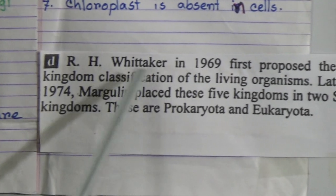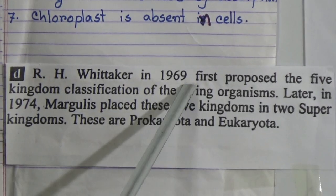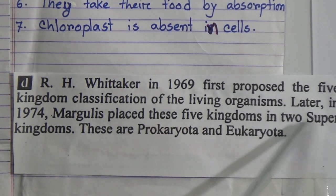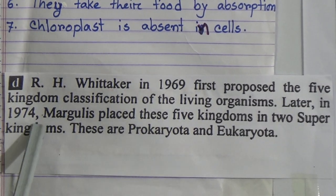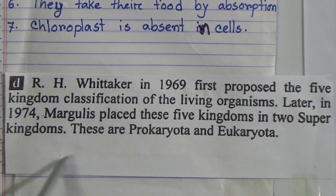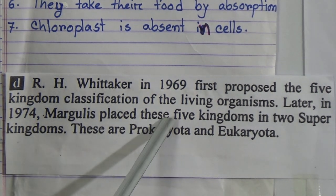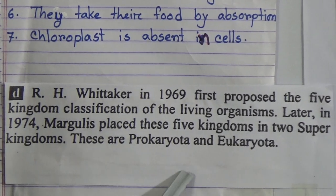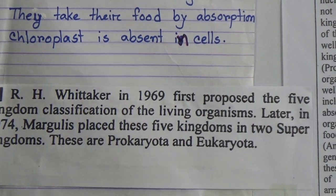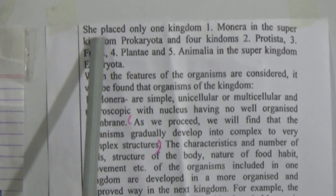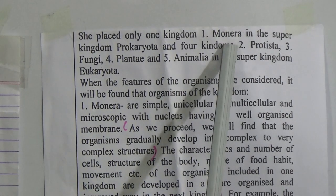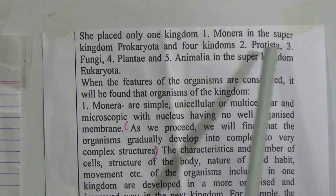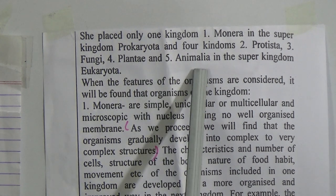R.H. Whittaker in 1969 first proposed the five-kingdom classification of living organisms. Later, in 1974, Margulis placed these five kingdoms into two super-kingdoms: Prokaryota and Eukaryota. She placed only Monera in the super-kingdom Prokaryota, and four kingdoms — Protista, Fungi, Plantae, and Animalia — in the super-kingdom Eukaryota.